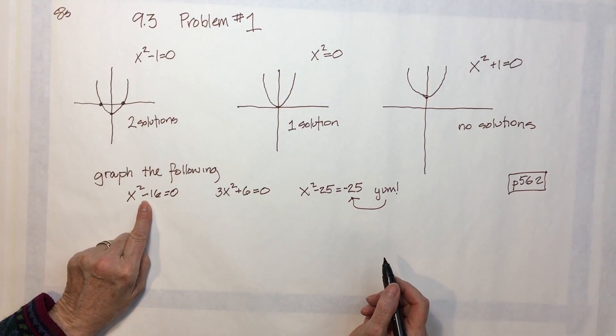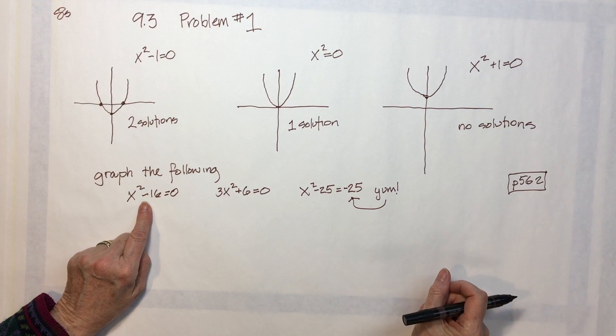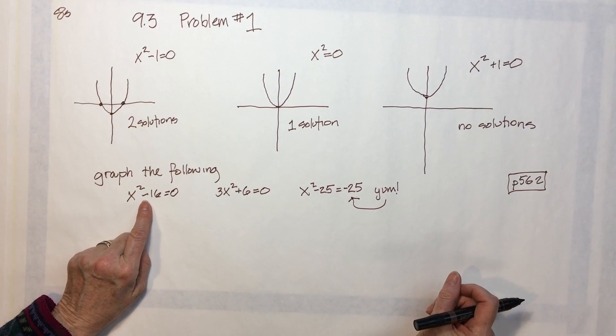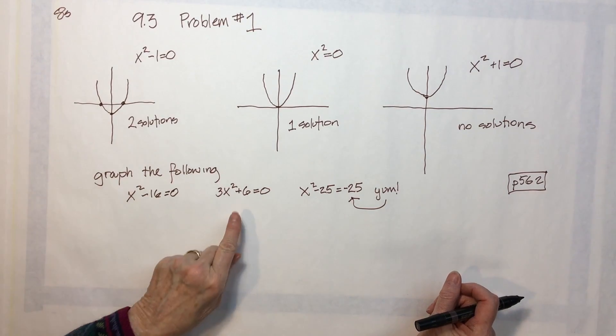You see that, again, this corresponds to this one, and it looks like it's going to have two solutions, and it's going to start way down at negative 16 on the y-axis.